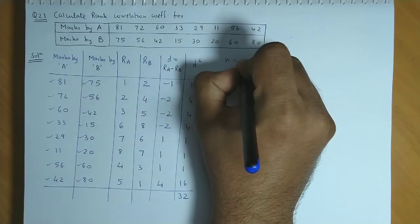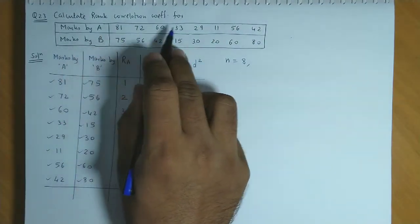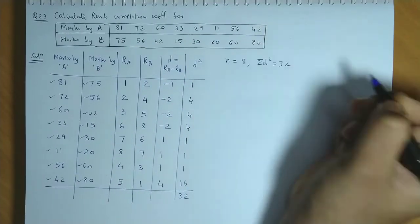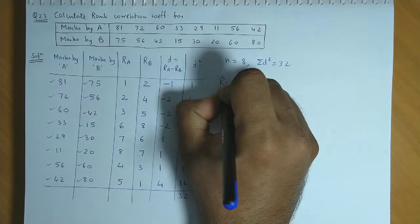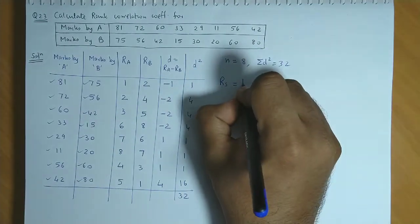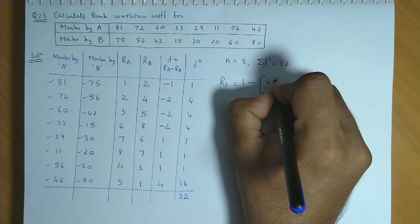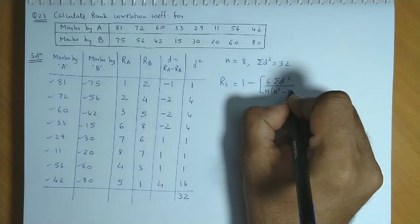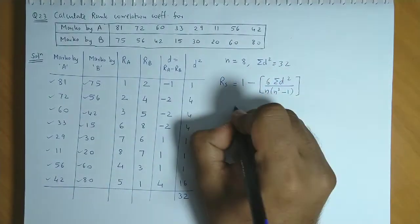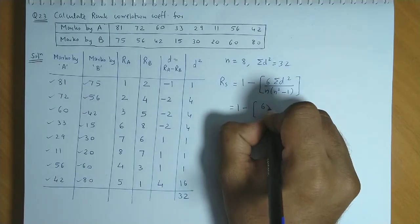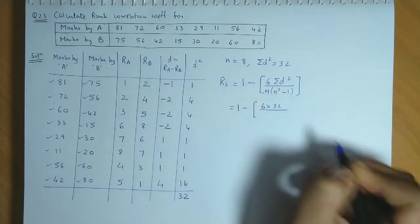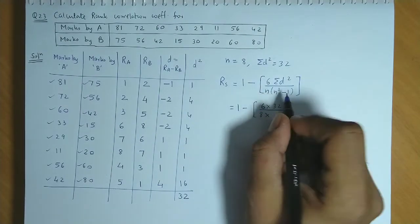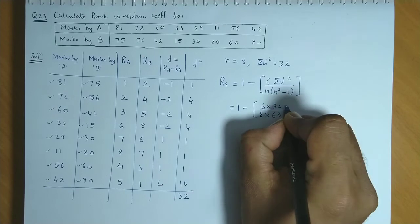So here n's value is 8, because there are 8 pairs: 1, 2, 3, 4, 5, 6, 7, 8. Summation of D square is 32. So now we could calculate RS as 1 minus 6 times summation of D square upon n into n square minus 1. This becomes 1 minus 6 times 32, divided by 8 into 8 square is 64 minus 1, so this is 63.